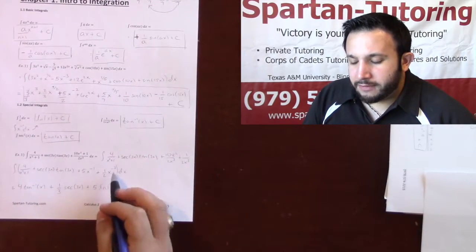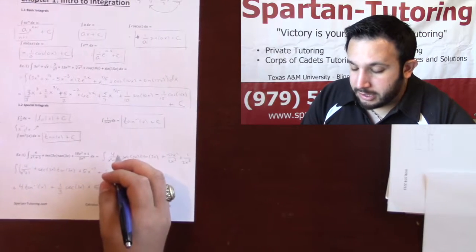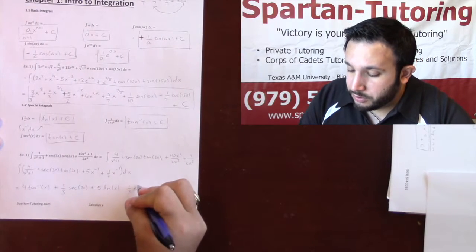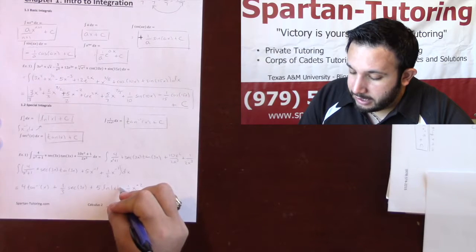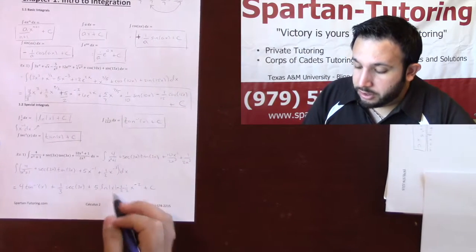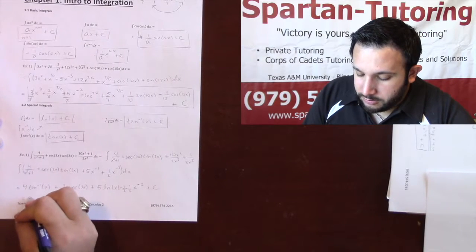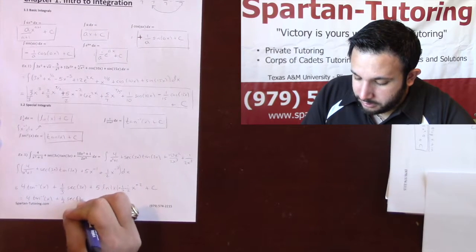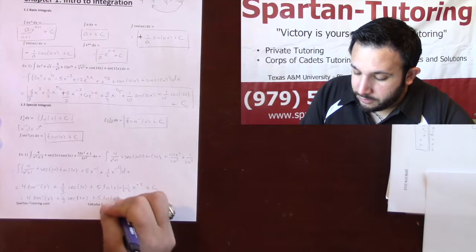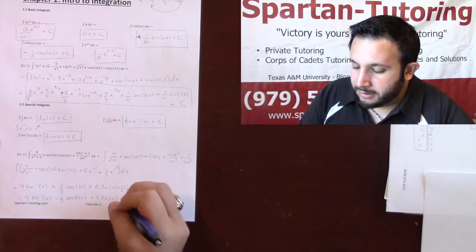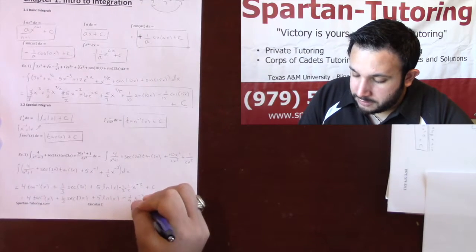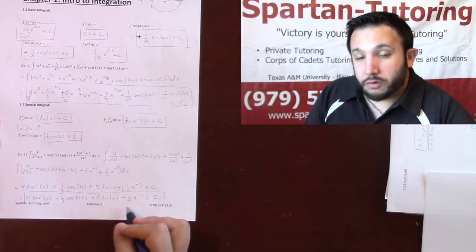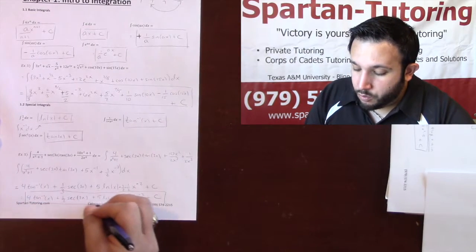And then finally, this 1 half x negative 3, that's your pretty standard basic anti-derivative. And so you rewrite your constant and your variable. You add 1 to the top. Negative 3 plus 1 is a negative 2. I take that negative 2, flip it, and put it in front. And so the only thing I'm going to change here, your final answer is still going to be that 4 arc tangent of x plus 1 third secant of 3x plus 5 times the ln of the absolute value of x. And your negative 1 half times 1 half is a negative 1 fourth x to the negative 2. And then plus c. If you want to write that last one as negative 1 over 4 x squared, bring that back to the bottom. That is more than okay.